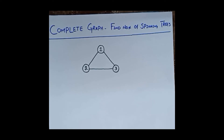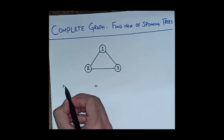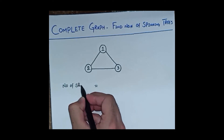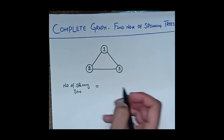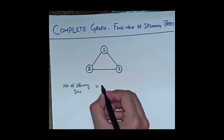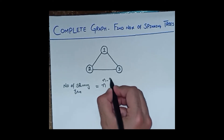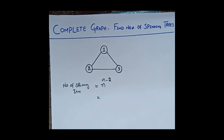So how we can find the number of spanning trees of a complete graph? By a simple formula. The formula is: number of spanning trees is equal to n raised to the power n minus 2.